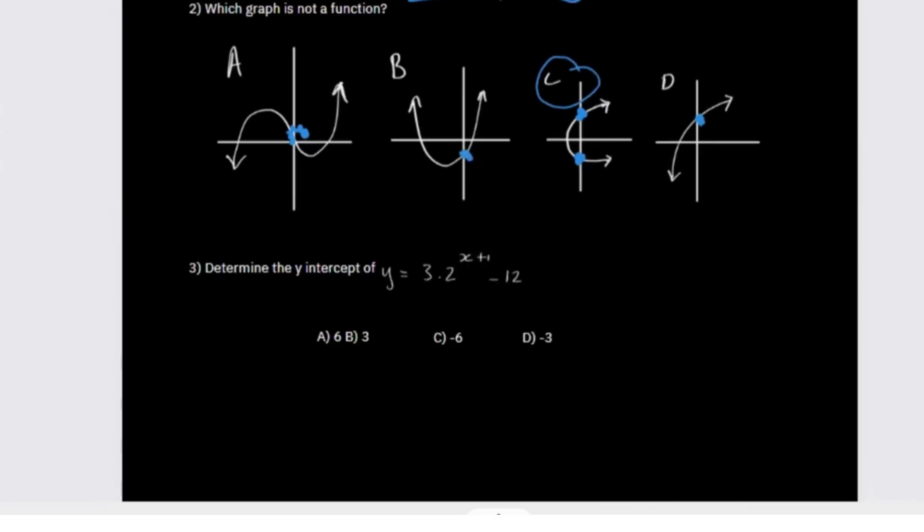which says we need to determine the y-intercept of y equals 3 times 2 to the power of x plus 1 minus 12. Now at the y-intercept, what do we know? x is equal to zero at the y-intercept. So we then just say y equals 3 multiplied by 2, where we replace x with zero, so it's zero plus one, minus 12.